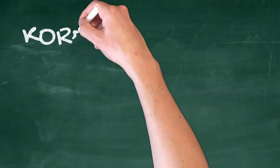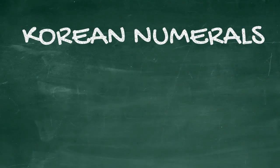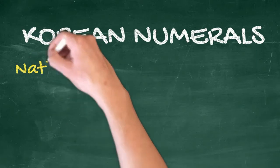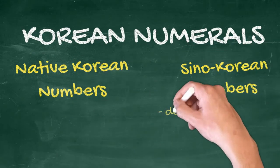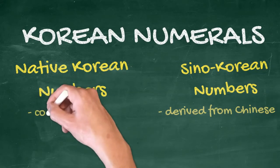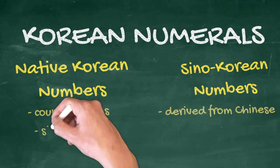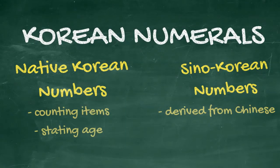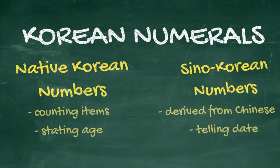A few notes before we dive right into the lesson. Number 1: Korean has two numeral systems — Native Korean numbers and Sino-Korean numbers, which are derived from the Chinese language. Native Korean numbers are mostly used when counting items and stating one's age. For other purposes, including telling dates, you only need to master the Sino-Korean numbers, most particularly 1 to 31.